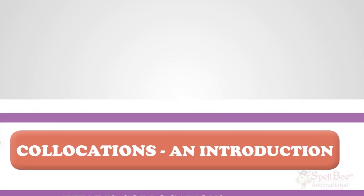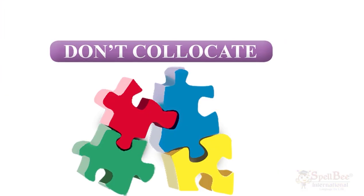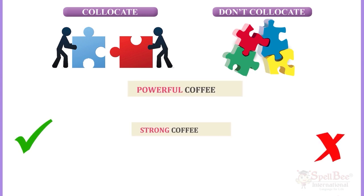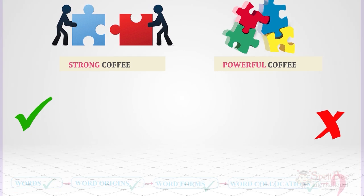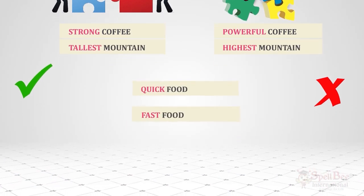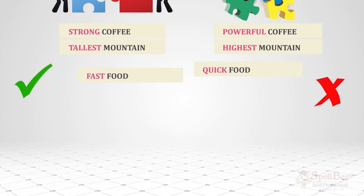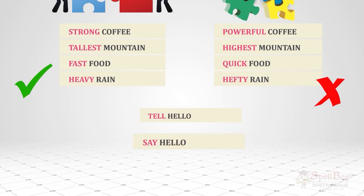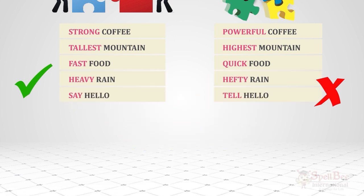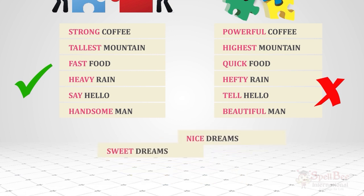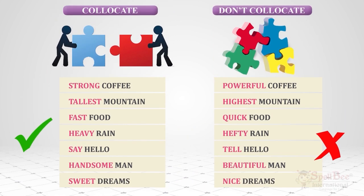Collocations are frequently used combinations of words — it's more to do with language usage. For example: 'strong coffee' not 'powerful coffee,' 'highest mountain' not 'tallest mountain,' 'fast food' not 'quick food,' 'heavy rain' not 'hefty rain.' We say hello, not tell hello. We never say 'a beautiful man' — we always say 'a handsome man.' We say 'sweet dreams,' not 'nice dreams.' It's more about language usage than grammar.